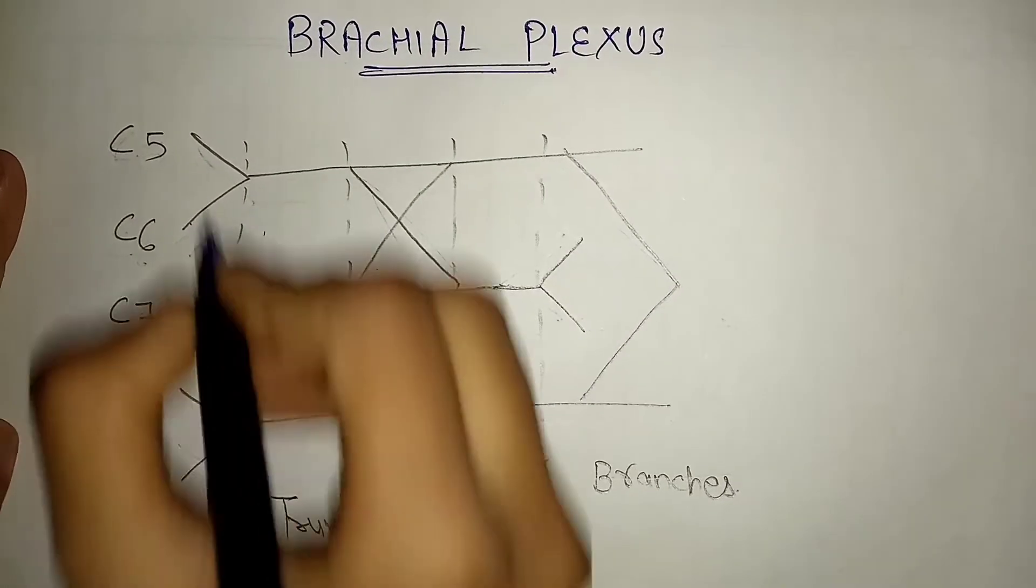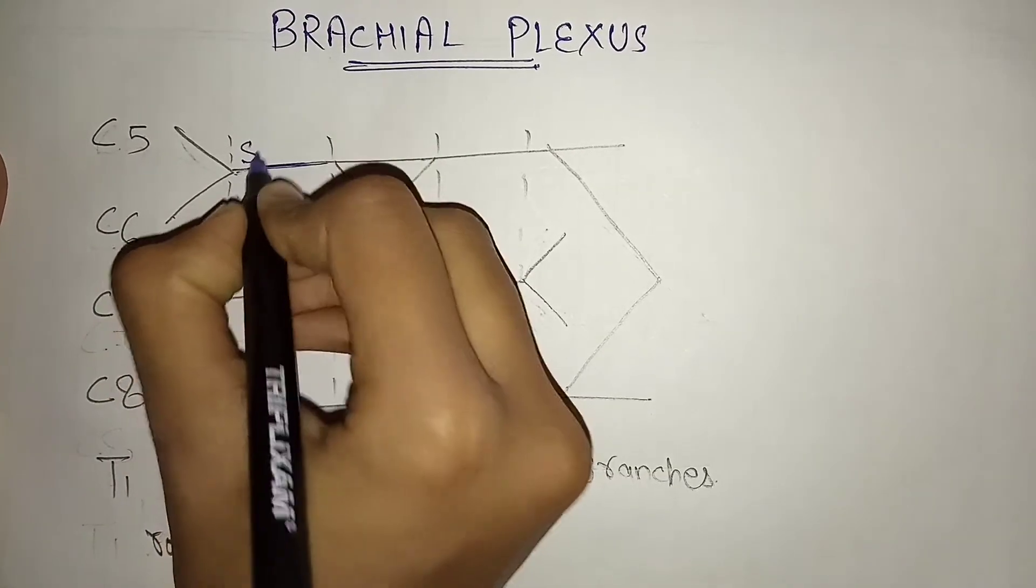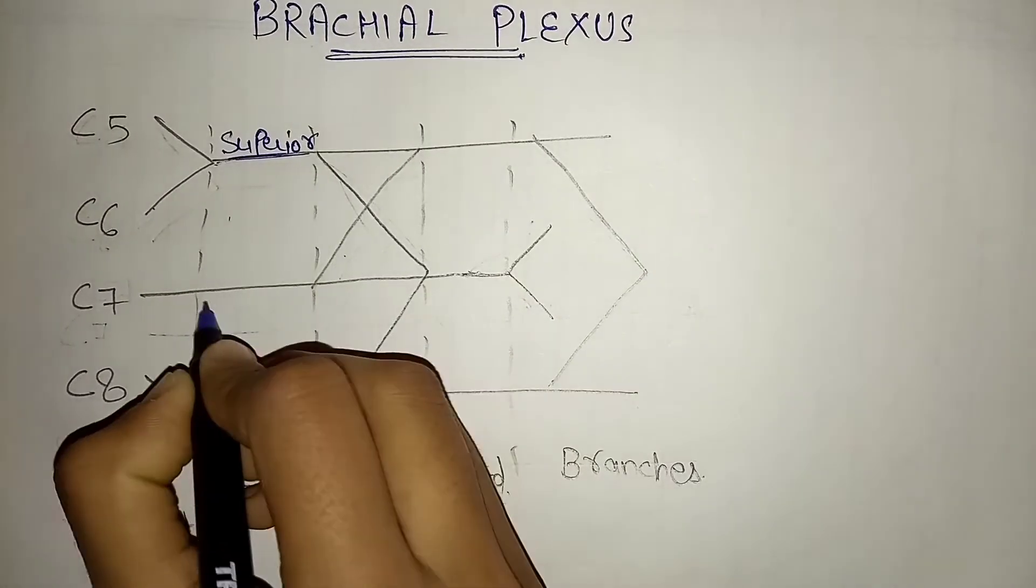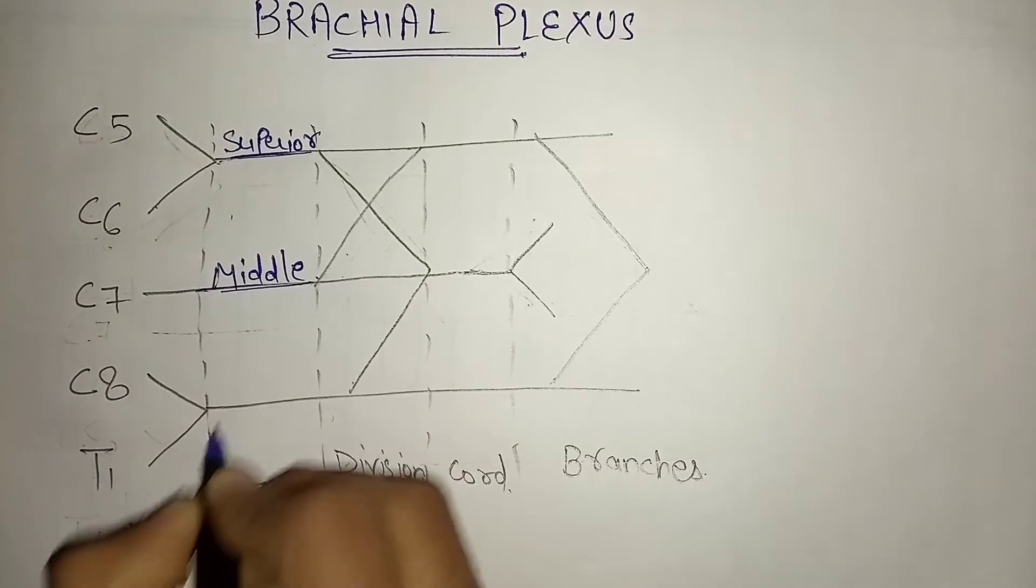So trunk is divided into three parts: superior trunk which is arising from C5 and C6, middle trunk, and then we have inferior trunk.